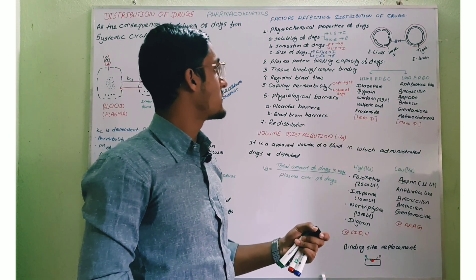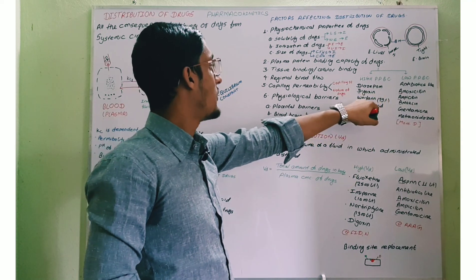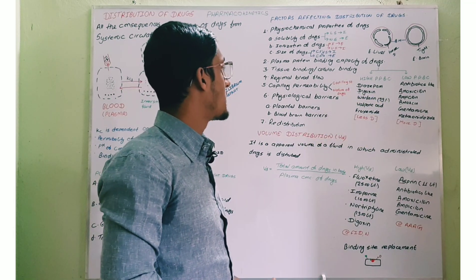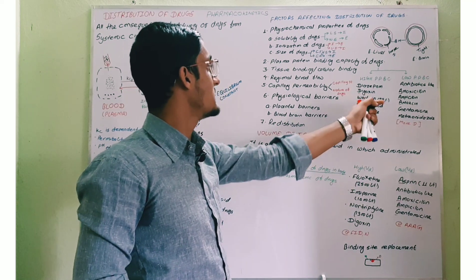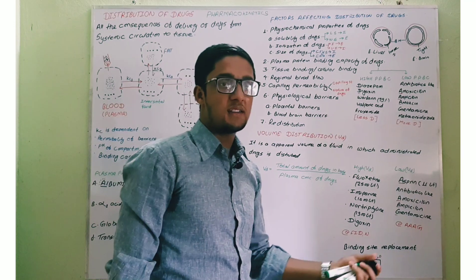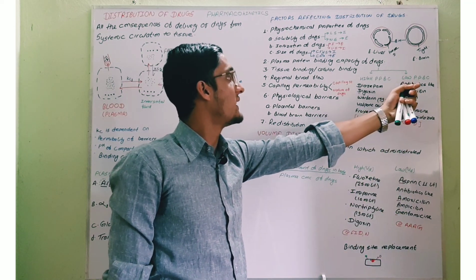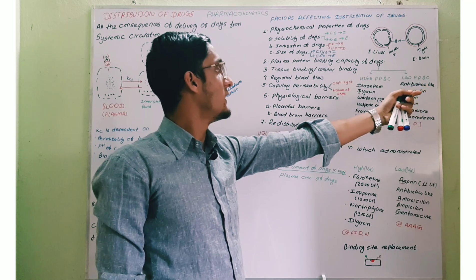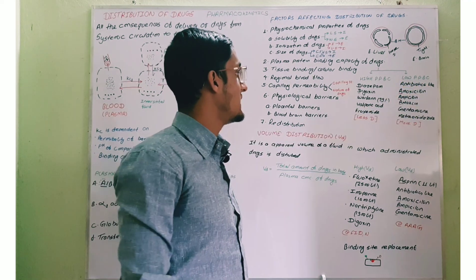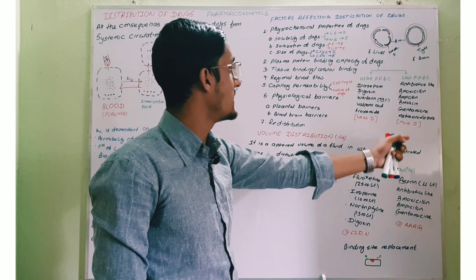Examples of drugs with high plasma protein binding capacity are diazepam, digoxin, warfarin — which has around 99% plasma protein binding capacity — and valproic acid and furosemide. Examples of drugs with low plasma protein binding capacity are antibiotics like ampicillin, amoxicillin, amikacin, gentamicin, and metronidazole.